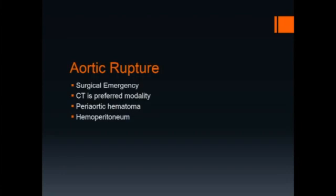Aortic rupture is a surgical emergency. Non-contrasted CT is the preferred modality for detecting aortic rupture, and ultrasound has no place in this situation. However, if ultrasound is performed, a periaortic hematoma or hemoperitoneum may be seen.